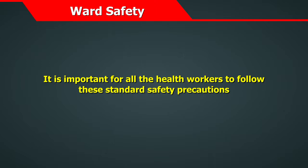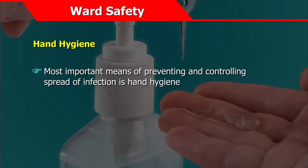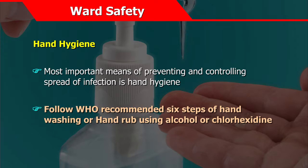Let us begin with the first precaution: hand hygiene. The most important means of preventing and controlling the spread of infection is hand hygiene. Follow the WHO recommended six steps of hand washing as shown later, or use hand rub with alcohol or chlorhexidine.